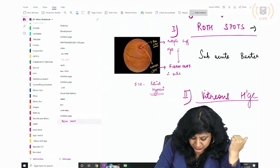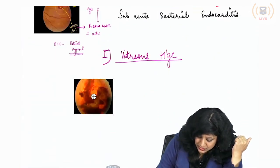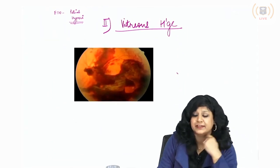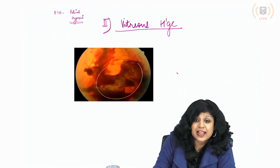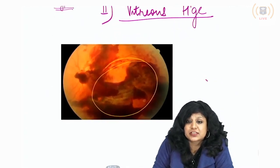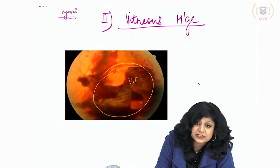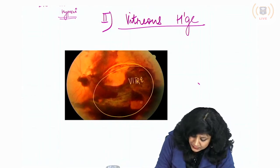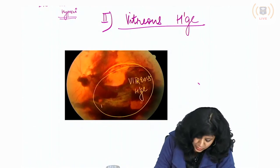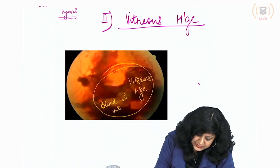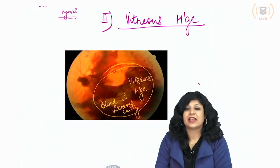This is how vitreous hemorrhage actually looks like — this is blood in the vitreous cavity. So this is actually vitreous hemorrhage: you have got blood in the vitreous cavity.